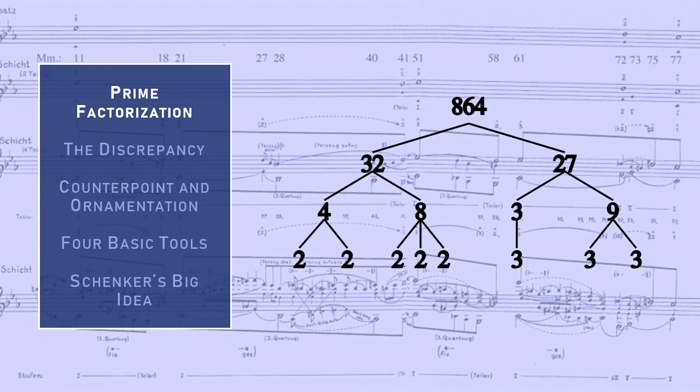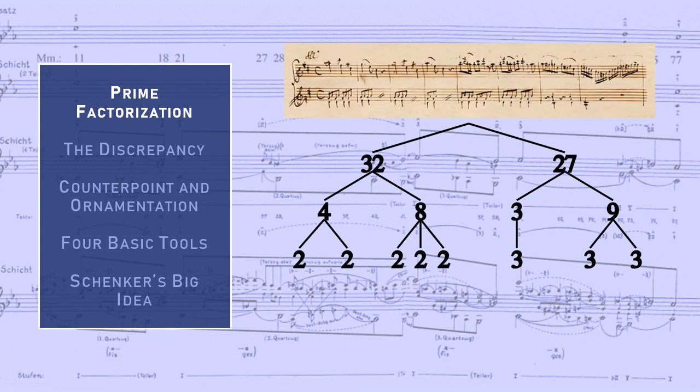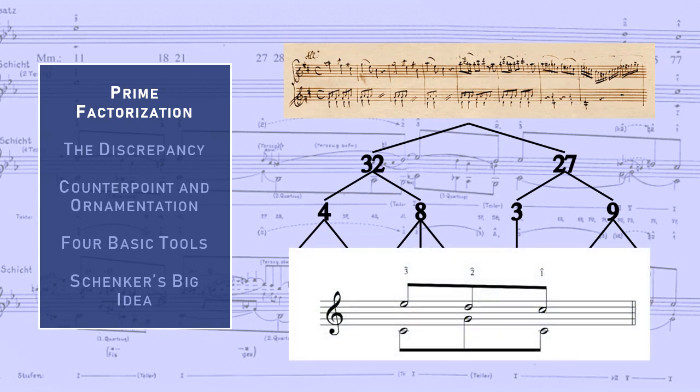A decent metaphor for Schenkerian analysis is prime factorization. You can take any positive integer and express it as a product of prime numbers. This example from Wikipedia shows how 864 can be expressed as 2 to the 5th times 3 to the 3rd. Schenker wanted to show something similar with tonal music — you can take a complicated piece of music and, by using a few basic analytical tools, show how it is composed of simpler structures, of which the Ursatz is only the most famous.